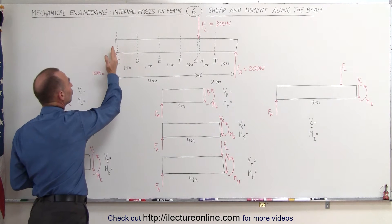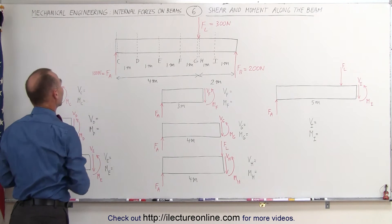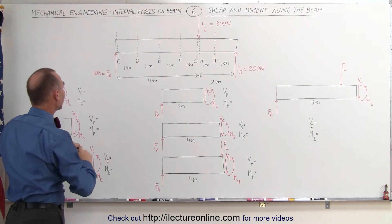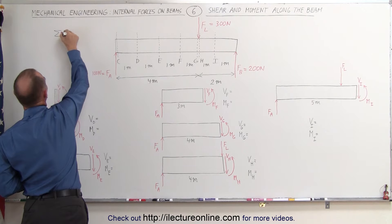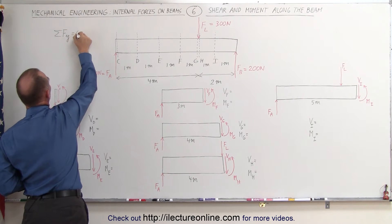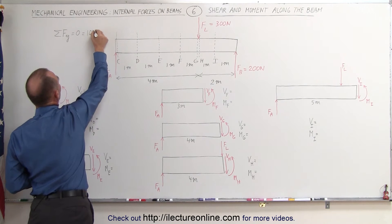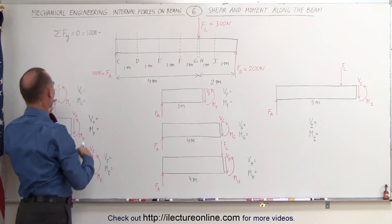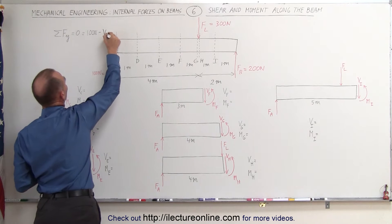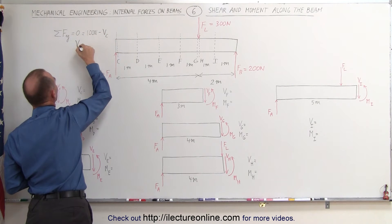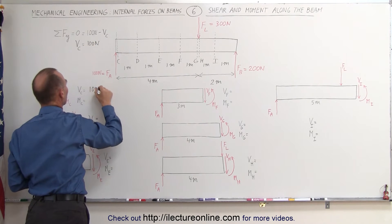The first point C is just to the right of force A, so basically the distance is equal to zero, and so we have a very thin section. To find the shear force, we need to find the sum of the forces in the y direction, and that's always going to equal zero. That gives us the force of A — a positive 100 newtons — minus the shear force V sub C. So the shear force at C is equal to 100 newtons.